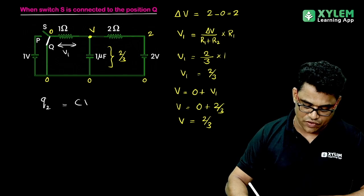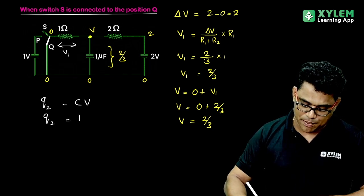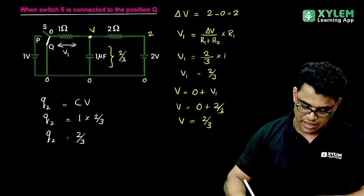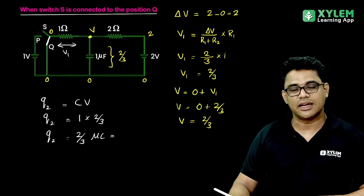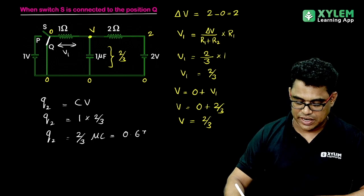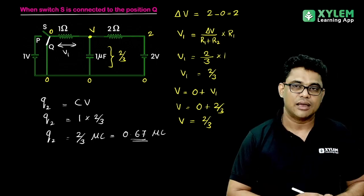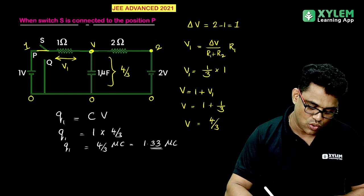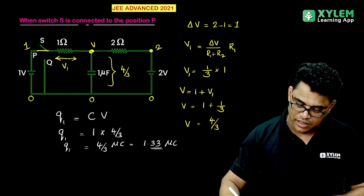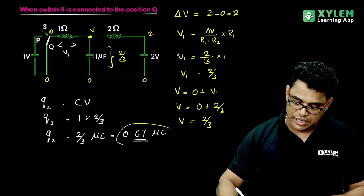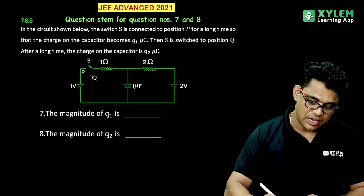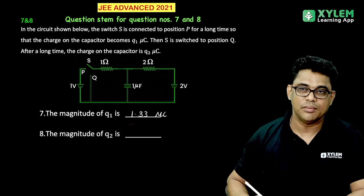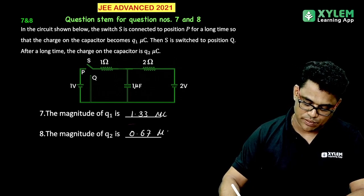Q2 is equal to C times V. With C = 1 micro farad and V = 2/3 volt, Q2 = 2/3 micro coulombs, which is approximately 0.67 micro coulombs of charge stored in the capacitor. So the final answers are: Q1 = 1.33 micro coulombs and Q2 = 0.67 micro coulombs.